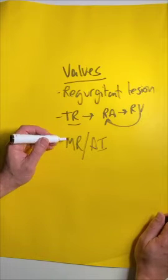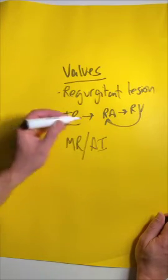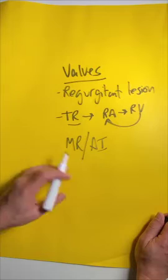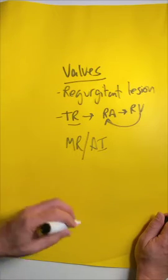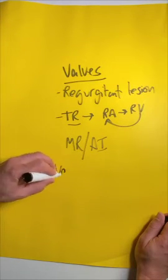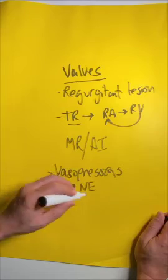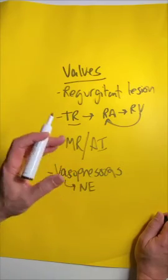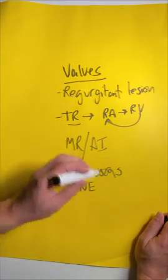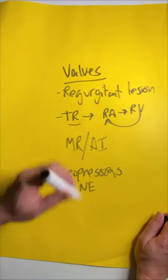These patients can be extremely challenging to manage when they present acutely. What they really need is surgery to fix that valve, so everything you do is just a temporizing measure. You're still going to put them on vasopressors like norepinephrine to ensure adequate perfusion to the distal tissues while you're on the phone with your surgeons to get them to the OR.